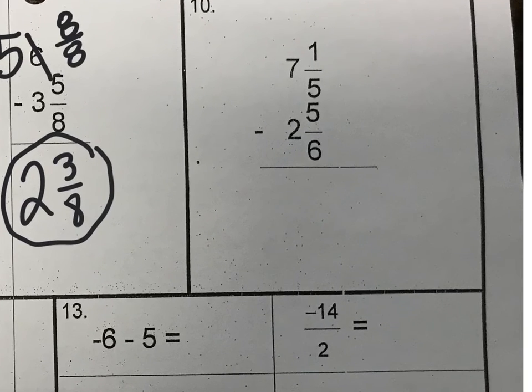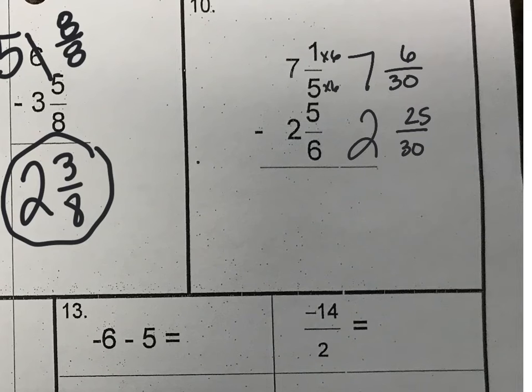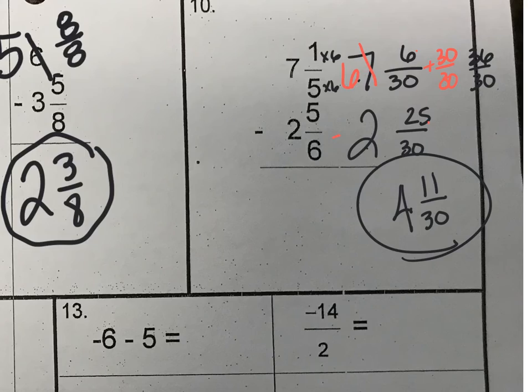Number 10, we have to get a common denominator. So I'm going to go with 30. So 7 and 6 thirtieths, because I'm going to say times 6. And then 2 and 25 thirtieths. Now, I can't take a subtraction, so I can't take 25 from 6, so I'm going to borrow again. So what I'm borrowing is a whole, so I'm going to add 30 thirtieths to this, which makes 36 thirtieths minus 25 thirtieths, which gives me 11 thirtieths. 6 minus 2 is 4, and that's as simplified as we get.